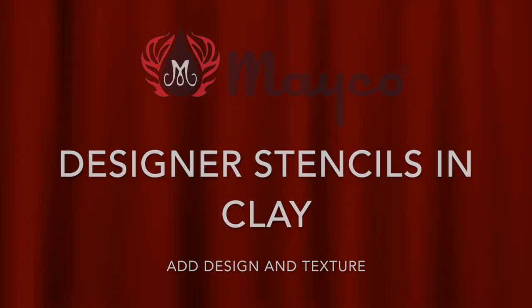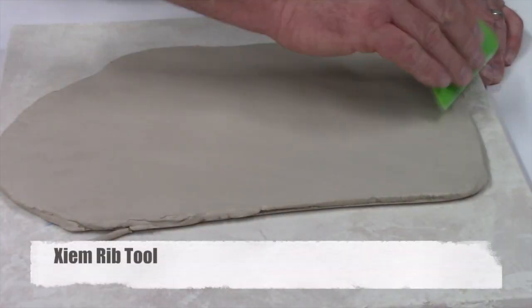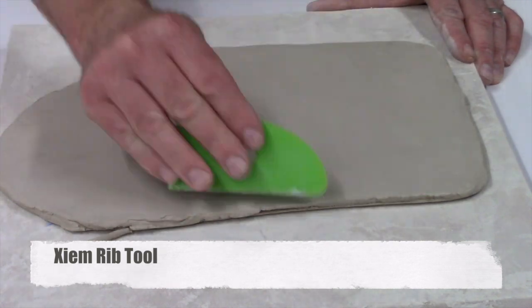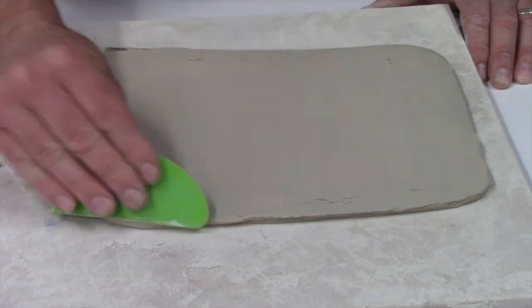How to use designer stencils in clay. First, roll out a slab of clay about a quarter of an inch thick. Smooth it out and make sure it's compressed by using a SIM rib tool.